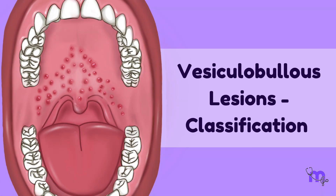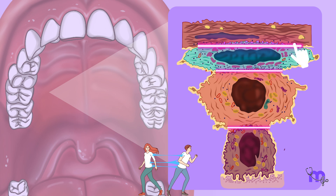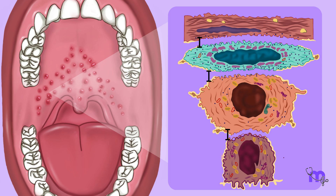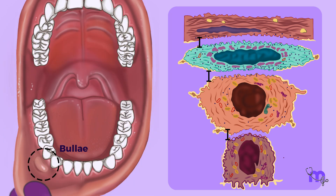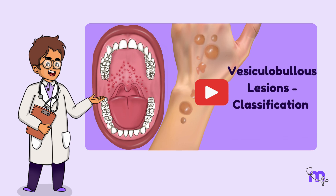Vesicular bullous lesions. A strong bond between different layers of the oral tissues keeps our oral mucosa healthy. Sometimes certain conditions can disrupt this bond and cause blister-like lesions called vesicles and bullae. Today's video focuses on enumerating these conditions called vesicular bullous lesions, which affect both mucosa and skin.